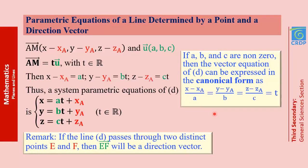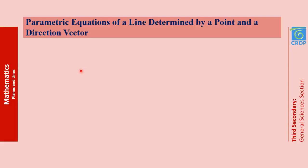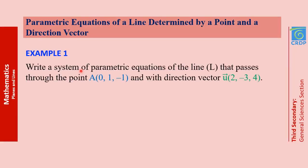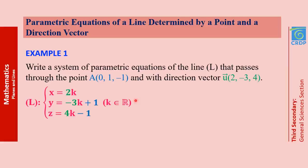If instead of a point and a direction vector we are given two points, to find a system of parametric equations of the line passing through points E and F, we compute the direction vector EF and choose either E or F as the known point. Example 1: write a system of parametric equations of line L passing through point A = (0, 1, −1) with direction vector U = (2, −3, 4). We simply write the general form and substitute: the components of U and the coordinates of A.